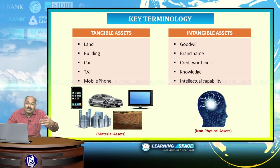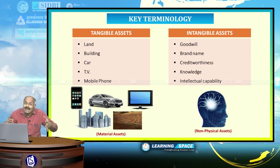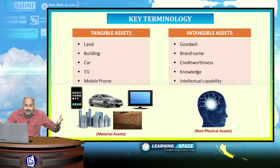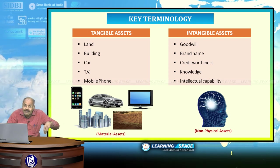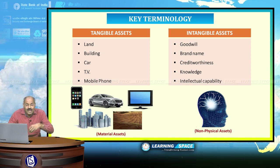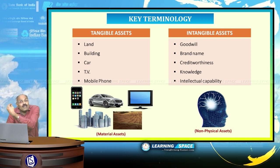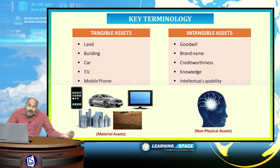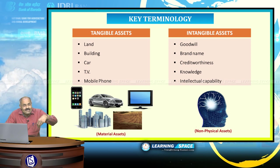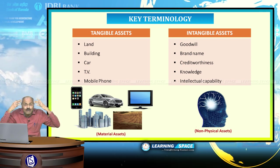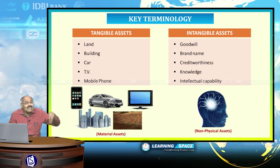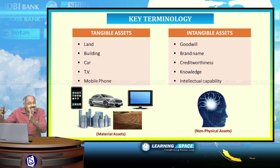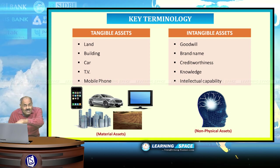Brand name is another intangible asset. When someone says Coca-Cola, Pepsi, or The Hindu, that brand name is automatically built in your mind and gives value to the brand. Credit worthiness is also intangible — if a friend with good credit worthiness asks for money, you will readily lend, but a previous defaulter creates hesitation. Knowledge and intellectual capability are also intangible assets. Tangible assets may be important, but intangible assets are far more important because you cannot build up reputation in a single day.